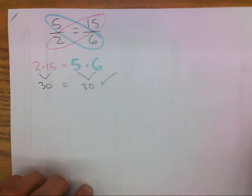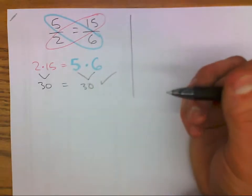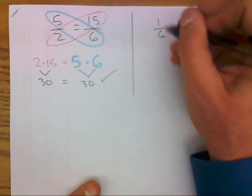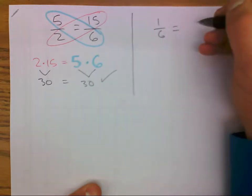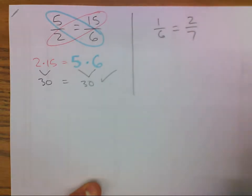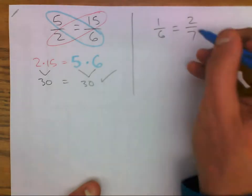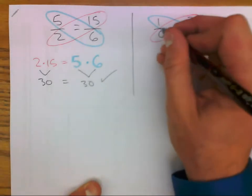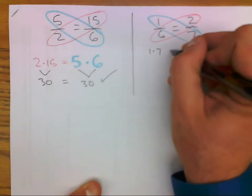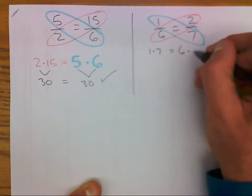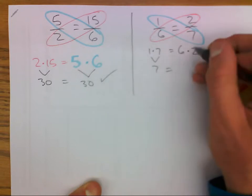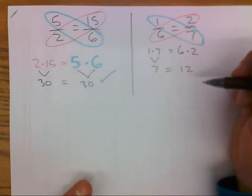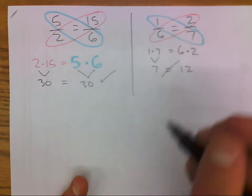Now, again, I like to give non-examples because it helps to see if the system works all the time. Let's try to figure out, is 1 to 6 proportional to 2 to 7? Well, let's again take a cross product here. 1 times 7 is equal to 6 times 2. Is 7 equal to 12? I don't think so. So, those are not proportional.